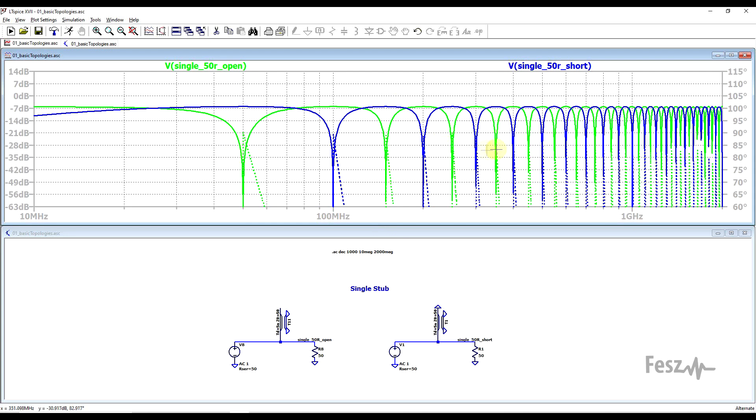So at triple, five times, seven times, and so on. So we get all of the odd multiples. So it's important to remember that this sort of stub filter is not a single frequency filter.